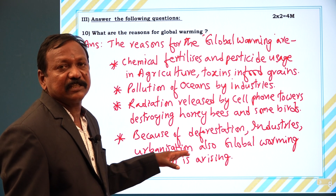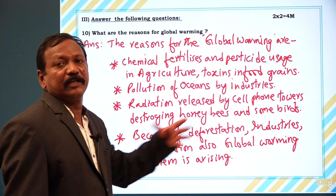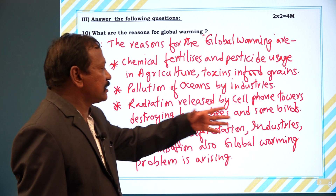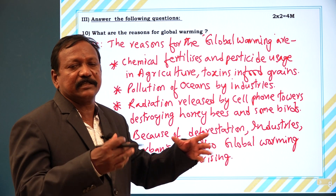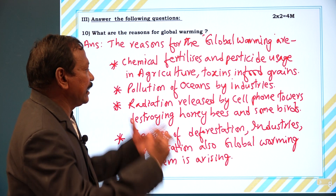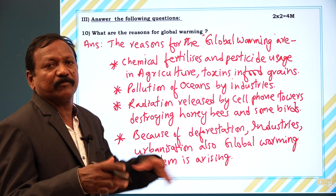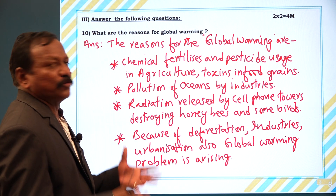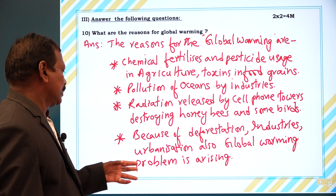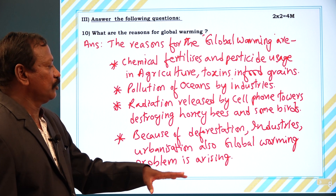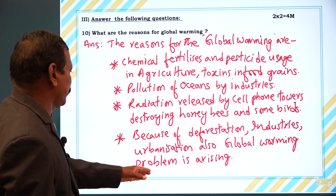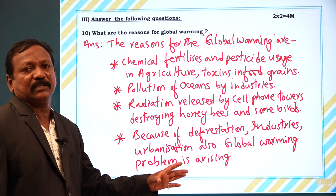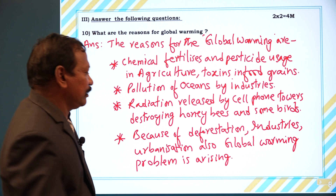Next, because of deforestation — deforestation means cutting down of the trees. Also, industries are generating sound pollution, water pollution, and air pollution — so many types of pollutions. Then urbanization also leads to the global warming problem arising. These are the causes or reasons for global warming.